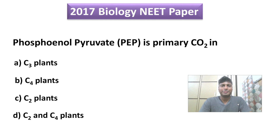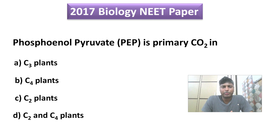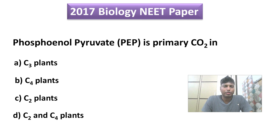Hello dear students, this is Praful and I welcome you all to my YouTube channel, OnePageBiology. In today's video I will be discussing one important question which appeared in the 2017 biology NEET paper. The question is: phosphoenolpyruvate is the primary carbon dioxide acceptor in — C3 plants, C4 plants, C2 plants, or option D: C2 and C4 plants. In order to understand the answer, watch the entire video.